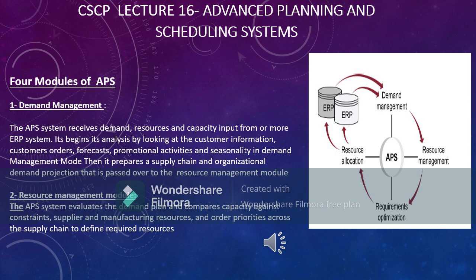Let's look at the four modules of APS. The first one is Demand Management. The APS system requires demand management resources and capacity input from one or more ERP systems. It begins its analysis by looking at customer information, customer orders, forecasts, promotional activities, and seasonality. In the demand management mode, it prepares the supply chain organization's demand projection, and that complete demand information is then passed to the resource management module.